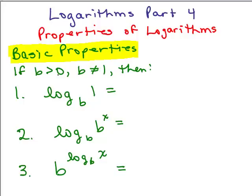If b is a real number greater than zero and b is not equal to one, so the base cannot be equal to zero, it has to be positive and it can't be equal to one, then what would the log of one base b equal? The question is, b to the what power equals one? Can you figure that out? b to what power will equal one?